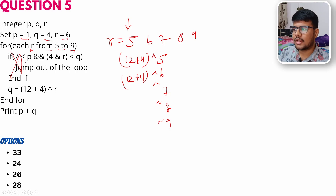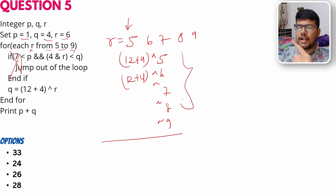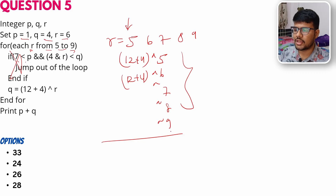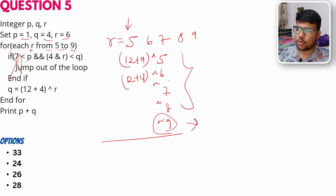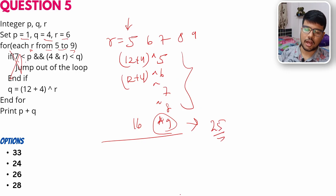Notice that q is overridden on every iteration. So instead of computing all five iterations, we only need the last one where r = 9. q = 12 + 4 = 16, then 16 XOR 9.